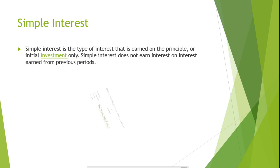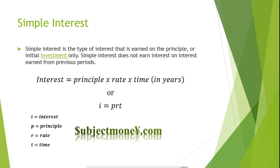The formula to solve the total amount of interest earned or paid in an investment or a loan that earns simple interest is: interest equals the principal times the rate times the time, or I equals PRT.